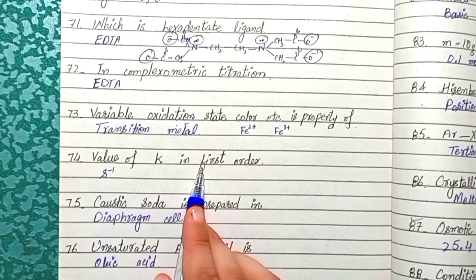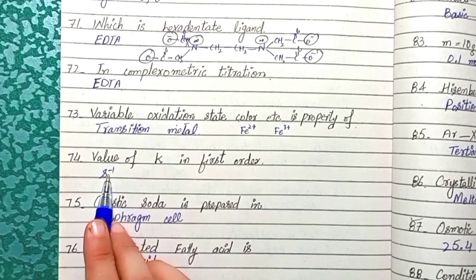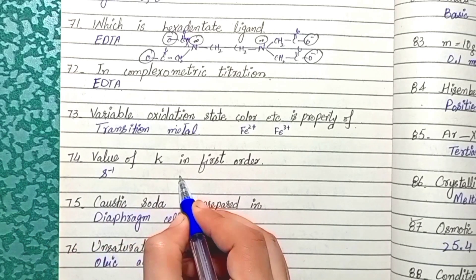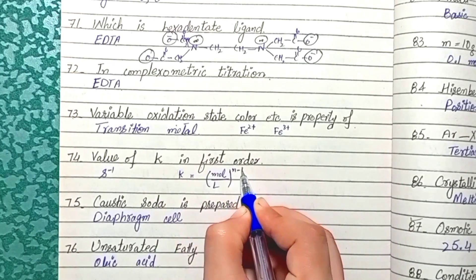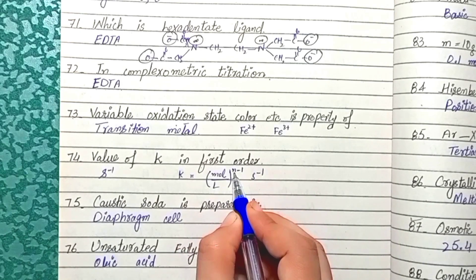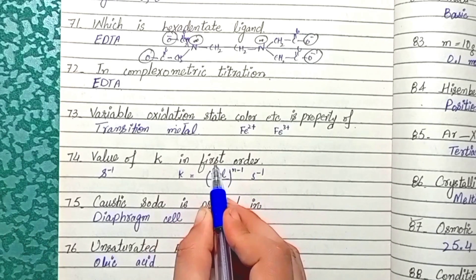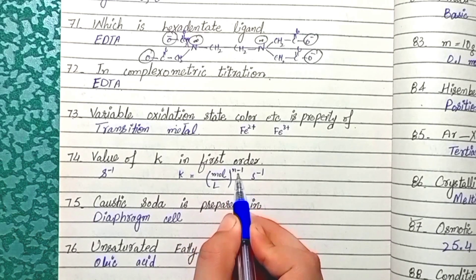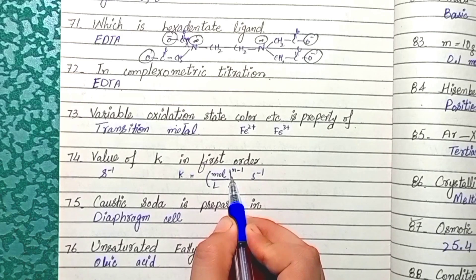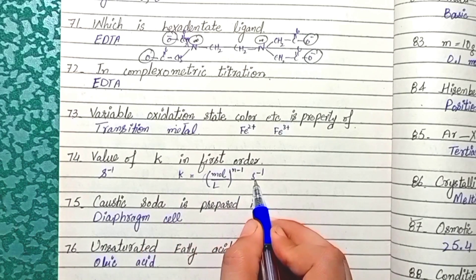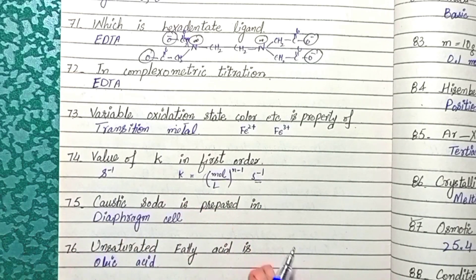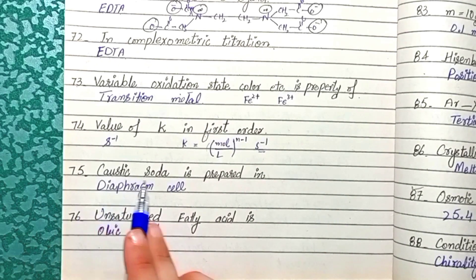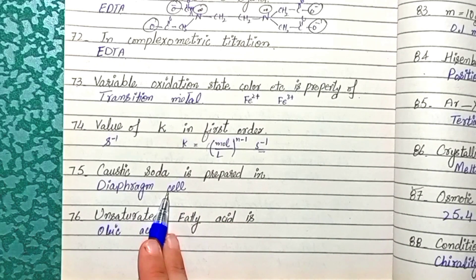Question 74: The value of k in first-order kinetics has units of per second. The general formula for k units is mol·L^−1·(n−1)·s^−1. For a first-order reaction, n = 1, so (n−1) = 0, and the mol·L^−1 term becomes 1 (anything to the power 0), giving k units of per second.